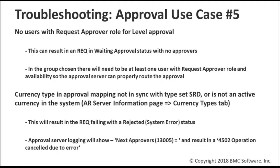Use case number five has to do with level approvals. There are a couple of things that are a little different: you have to set up an approval mapping. If you're mapping to a group, there has to be at least one user in that group with the request approval role, and they have to have availability. If that is not the case, then that approval is not going to work. It won't find any matches, and the approval will go to waiting approval with no approvers. Make sure if you've got a group defined in a level approval that there are users with the request approval role for that group and they have availability.